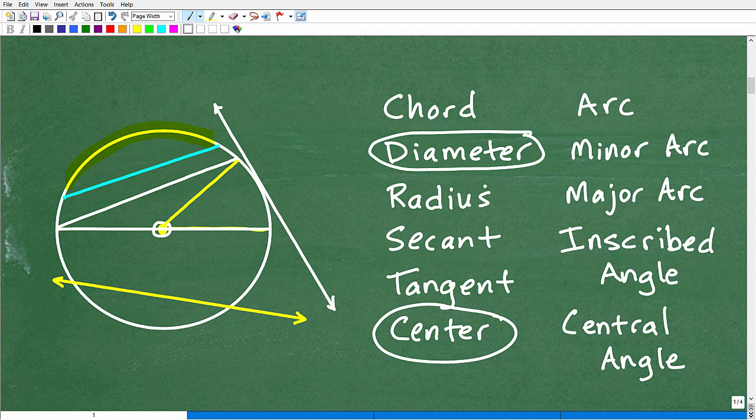All right. So now that we got the diameter down, let's talk about the radius. Now, diameter and radius, these are pretty common terms with circles. Most people probably kind of know these, but let's talk about this. So the radius starts from the center and goes out to the edge. So half of the diameter is the radius, or twice the radius is the diameter. So this right here would be the radius.